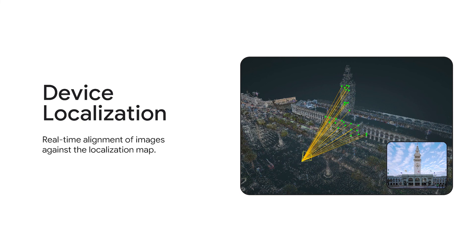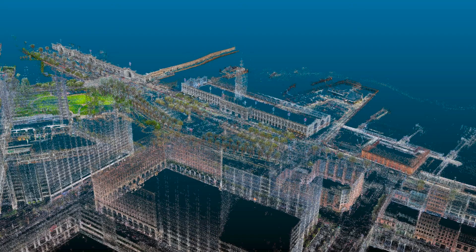This process makes use of TPUs, Google's machine learning accelerators, and it takes less than a second. Using the response from VPS, the Geospatial API takes care of merging your local coordinates with the geographic coordinates so you can work in a single coordinate system. This launch offers a very rare combination: the Geospatial API builds on the visual positioning service, which is in a very mature state, and we make the API available for nearly all areas covered by Google Street View, which is very widely scaled.